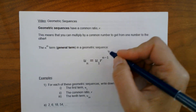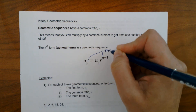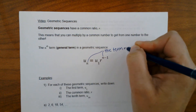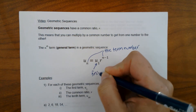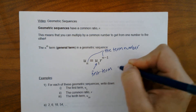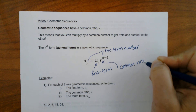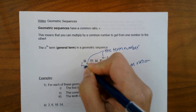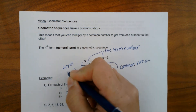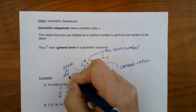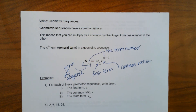Let's go through what each of these means. n represents the term number, u sub 1 is the first term, r is the common ratio, and u sub n is the term we're talking about in the sequence. Let's look at how to use this.